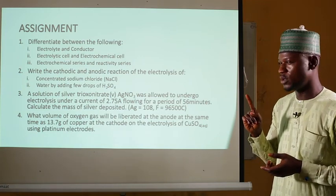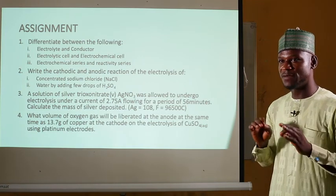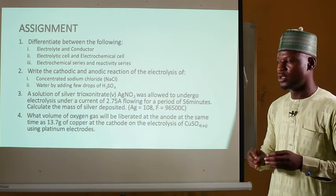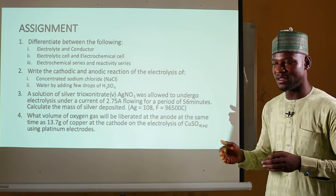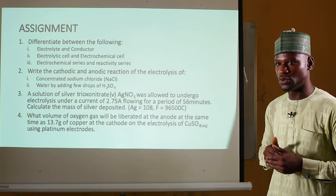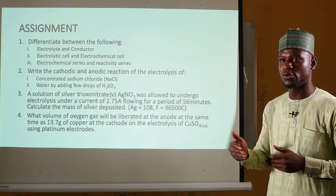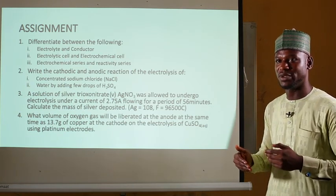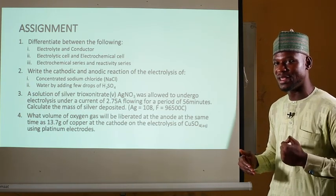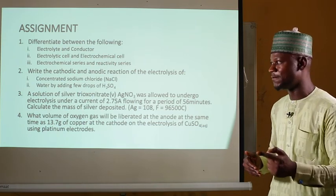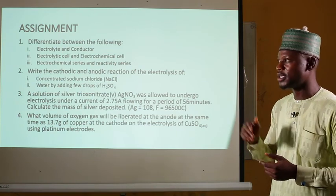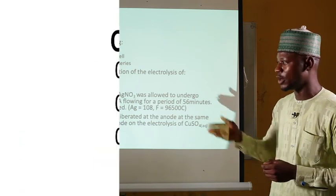Question four: what volume of oxygen gas will be liberated at the anode at the same time as 13.7 grams of copper at the cathode, on the electrolysis of copper(II) tetraoxosulfate(VI) using platinum electrodes? Note that the platinum electrode is inert and will not take part in the reaction. Use the second law of electrolysis — compare the charges on copper and oxygen to calculate the equivalent moles of oxygen liberated. Remember that one mole of any gas at STP gives 22.4 dm³. If you have any questions, you can contact us using the numbers provided.